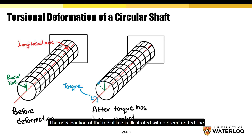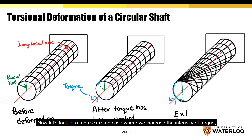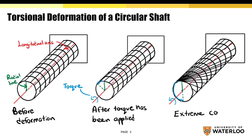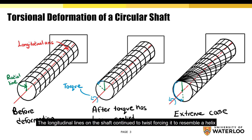The new location of the radial line is illustrated with the green dotted line. Now let's look at a more extreme case where we increase the intensity of torque. The longitudinal lines on the shaft continue to twist, forcing it to resemble a helix. The following slide will help analyze the shaft after deformation in more detail.